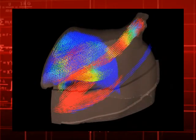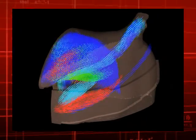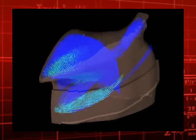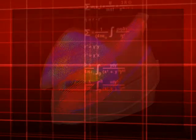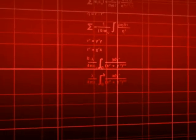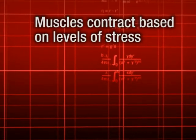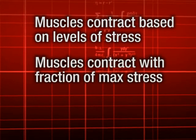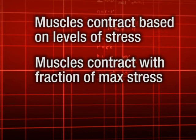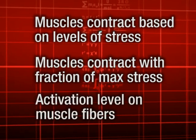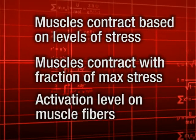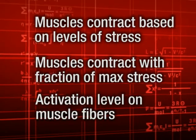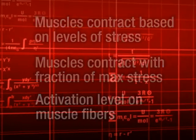The next task is to model muscular activity. Muscular activation on a microscopic level is intricately complex. However, we are able to model macroscopic muscular activity based on the distinctive structural characteristic of the bundled fibers — that muscles contract based on levels of internal stress. Muscles contract when a fraction of their maximum stress is applied. This fraction is referred to as the activation level, and it can be differently distributed on individual muscle fibers within the same muscle.